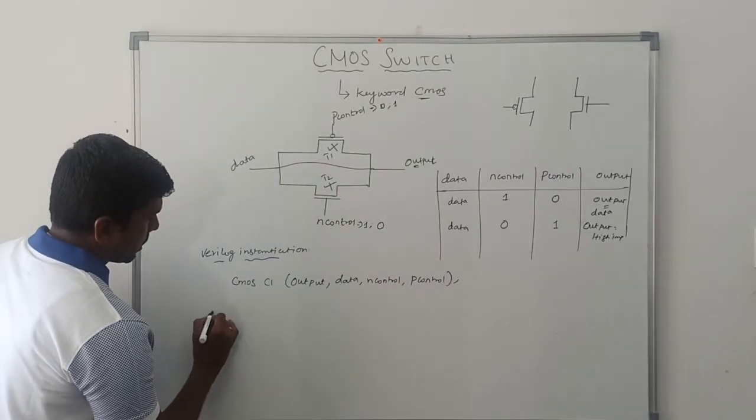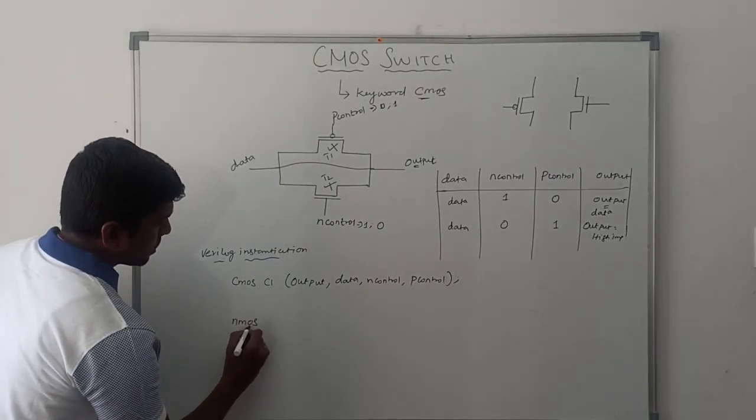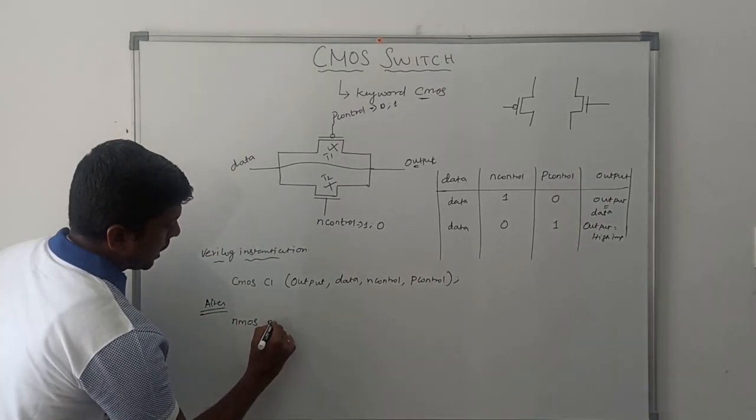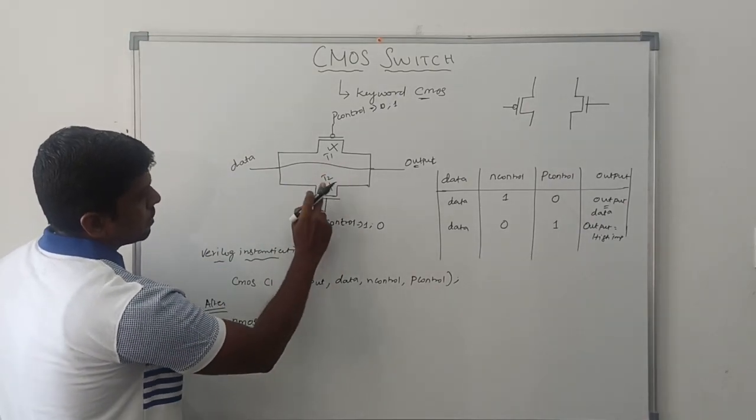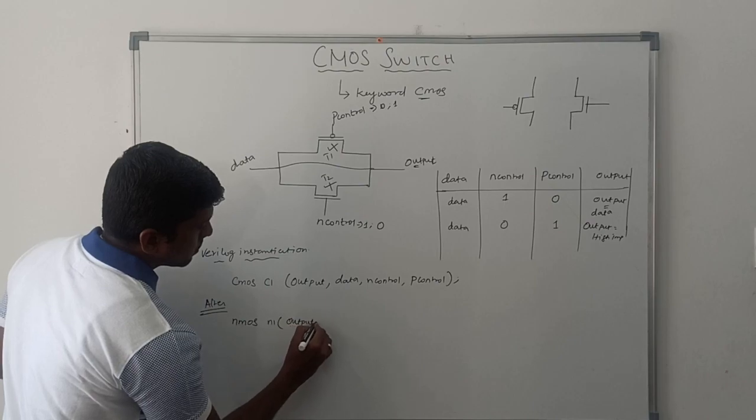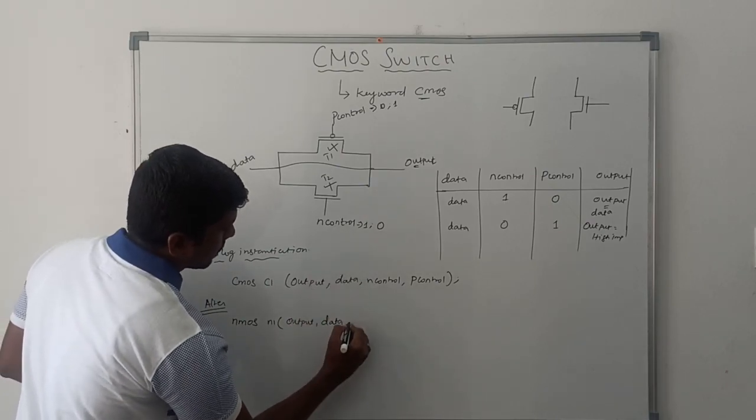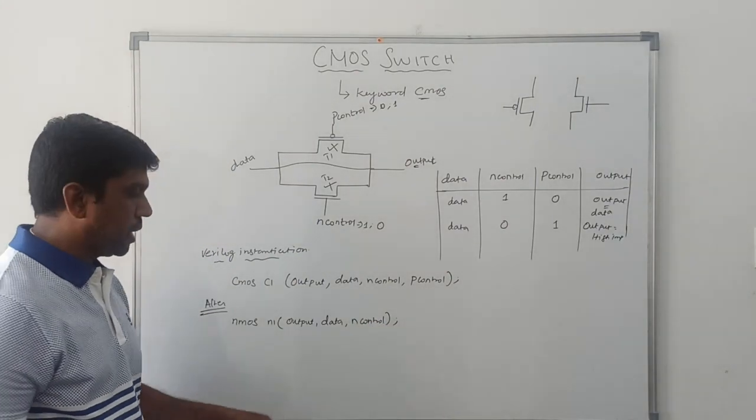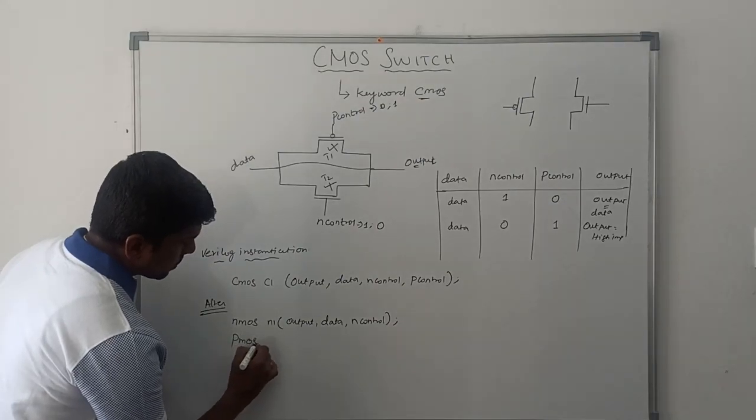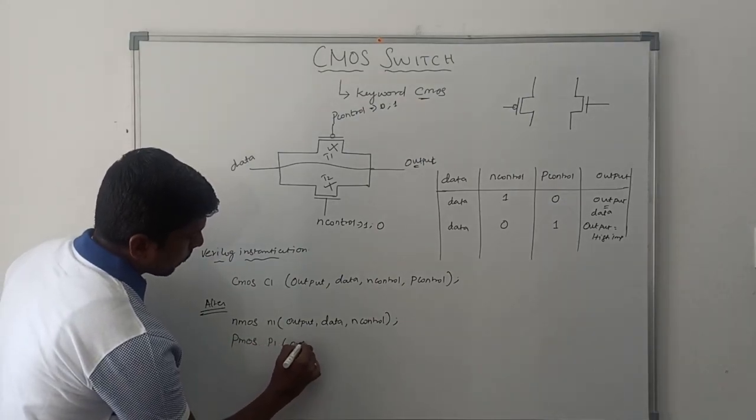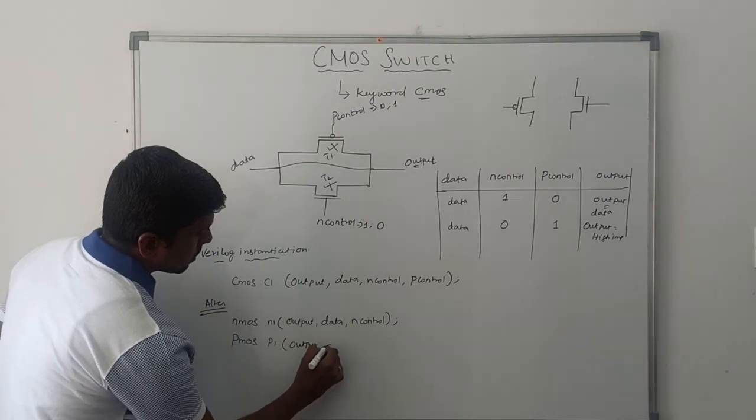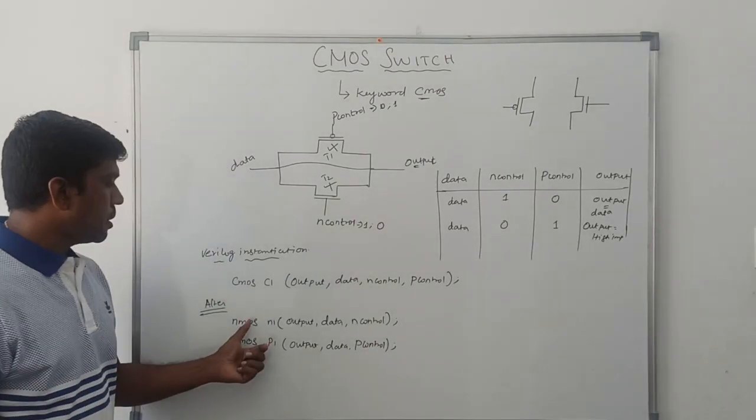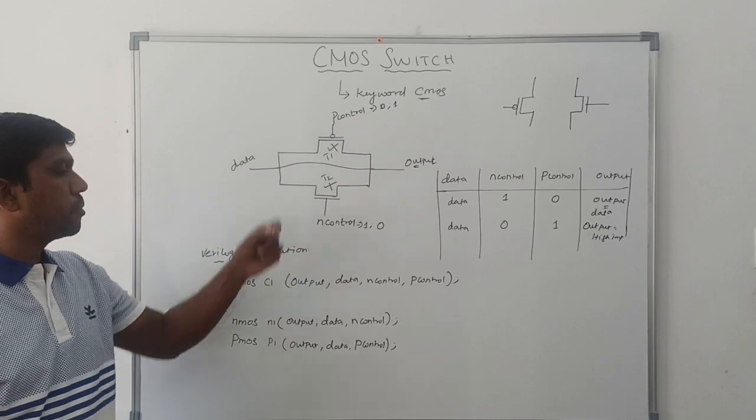Alternating representation: NMOS N1, let me consider this one - output comma data comma N control. Then PMOS P1 - output comma data comma P control. It is an alternative Verilog instantiation for CMOS switches.